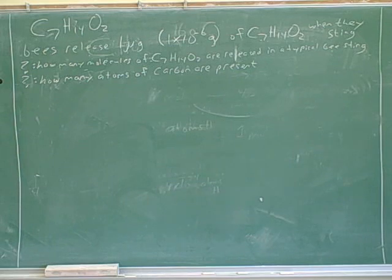Do you have this molecule? And bees release 1 microgram, which is about this. How many molecules of C7H14O2 are released in a bee sting? Does that question make sense? Yeah. So the total amount bees are releasing is one microgram.